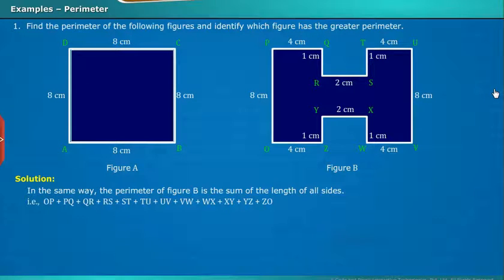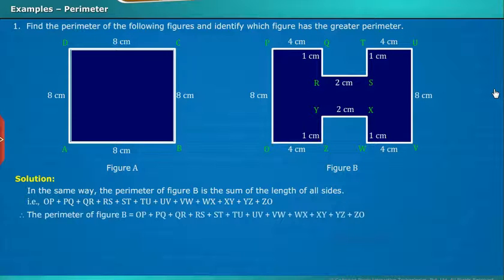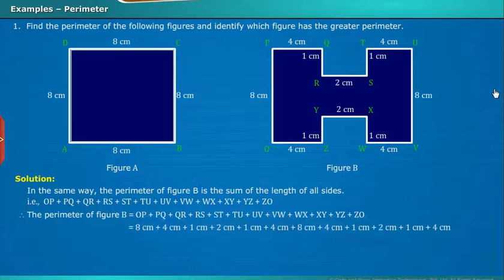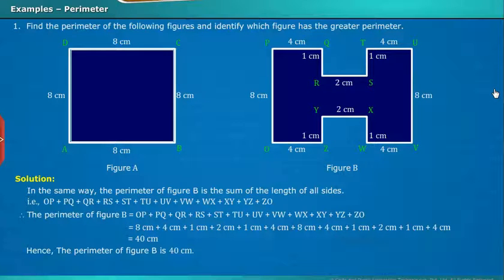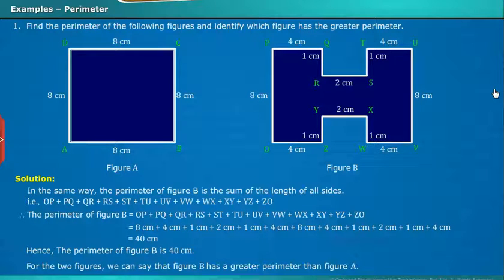In the same way, the perimeter of figure B is the sum of the length of all sides, that is OP plus PQ plus QR plus RS plus ST plus TU plus UV plus VW plus WX plus XY plus YZ plus ZO. By substituting the values, we get the perimeter of figure B is 40 centimeters. Hence, the perimeter of figure B is 40 centimeters. For the two figures, we can say that figure B has a greater perimeter than figure A.